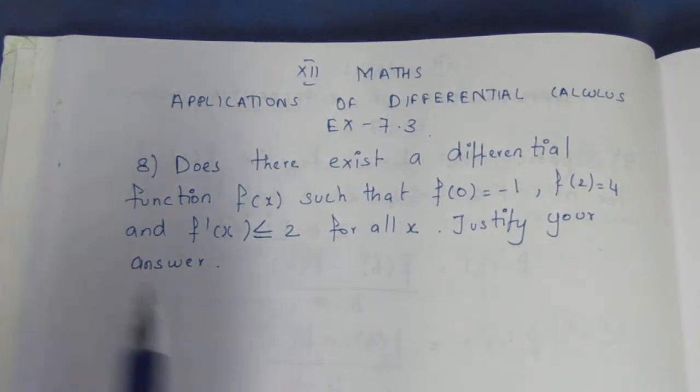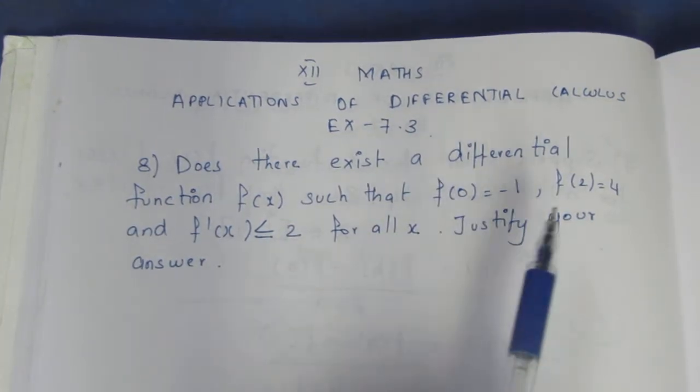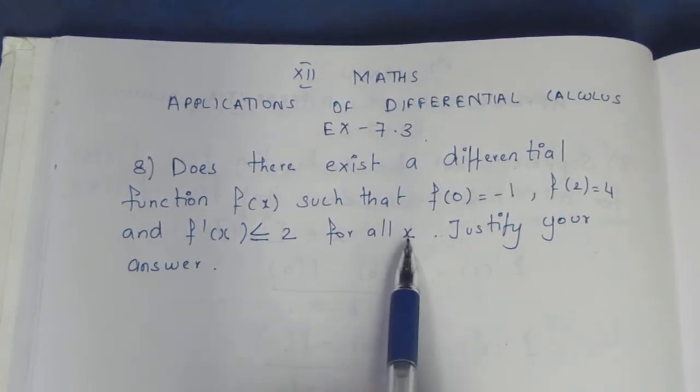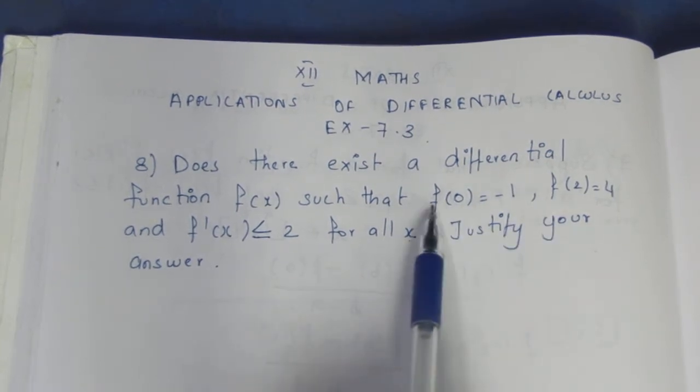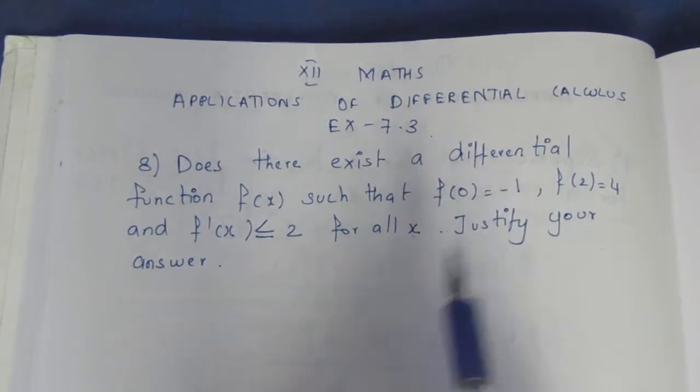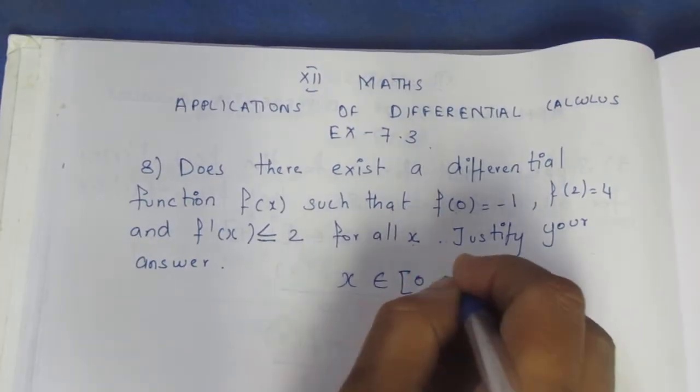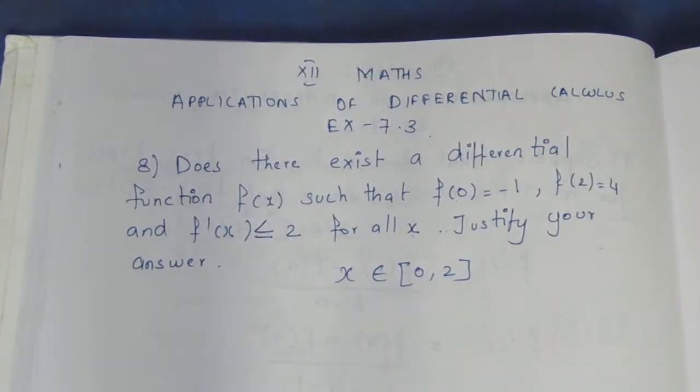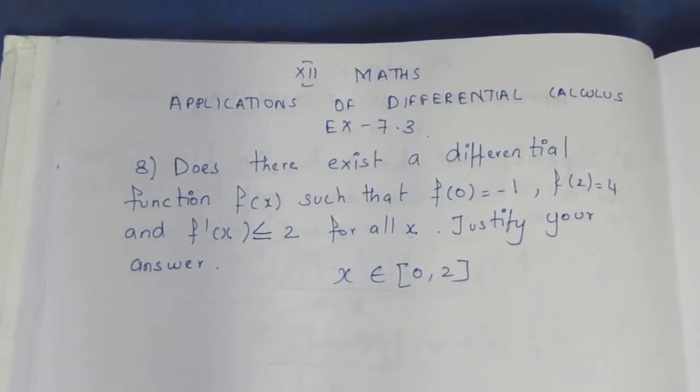So f'(x) ≤ 2 for all x. What is the value of x? 0 to 2. We use the usual f(x) and substitute values. So x belongs to the closed interval [0, 2].